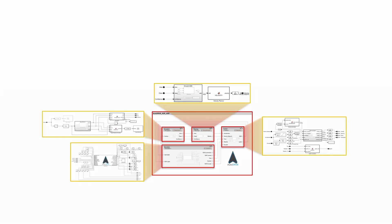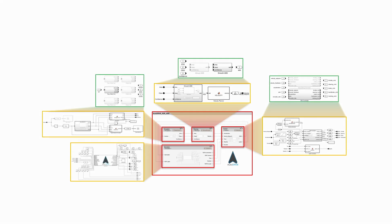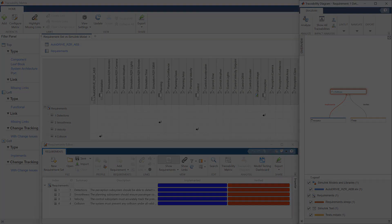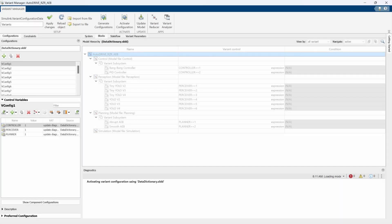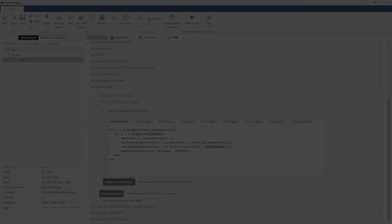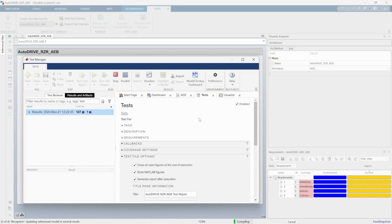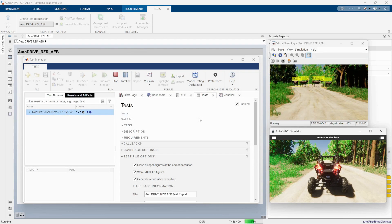The components and subsystems of the system under test are implemented as Simulink models right within the system architecture abstraction layer. This powerful tool suite also allows for traceable requirements engineering, efficient variant management, granular parameter sweep setup, systematic test case definition, and automated execution of the simulations.